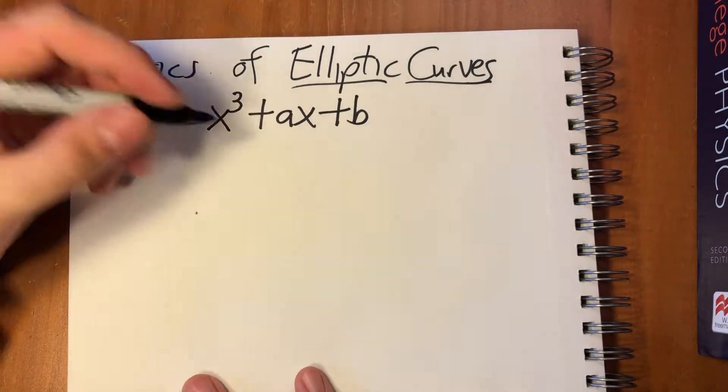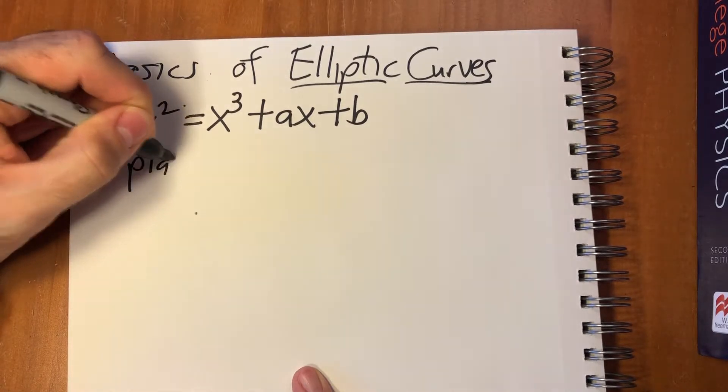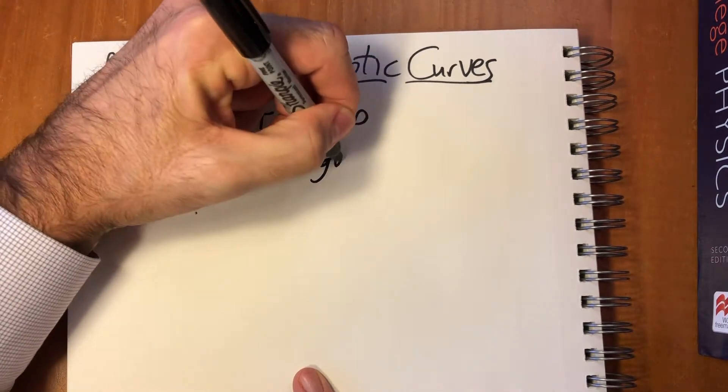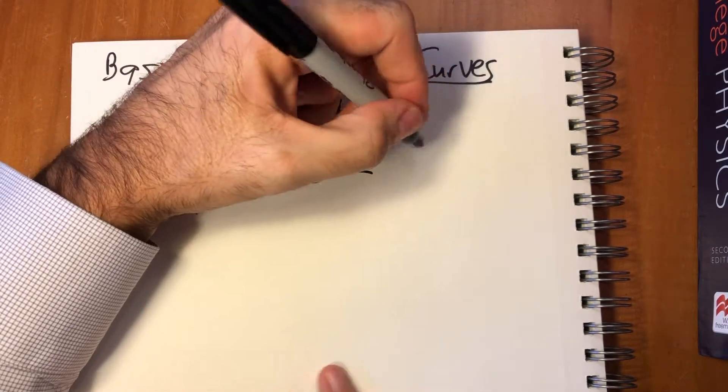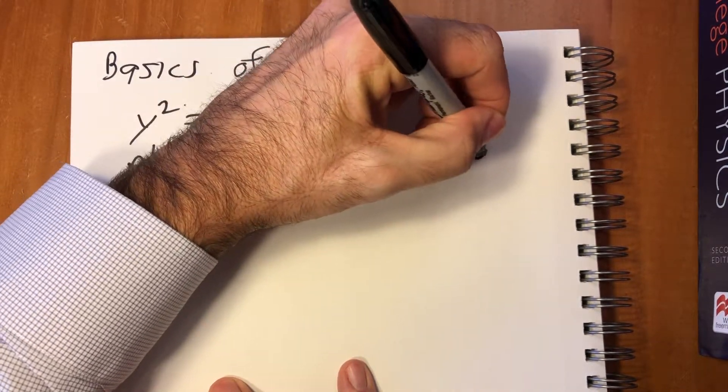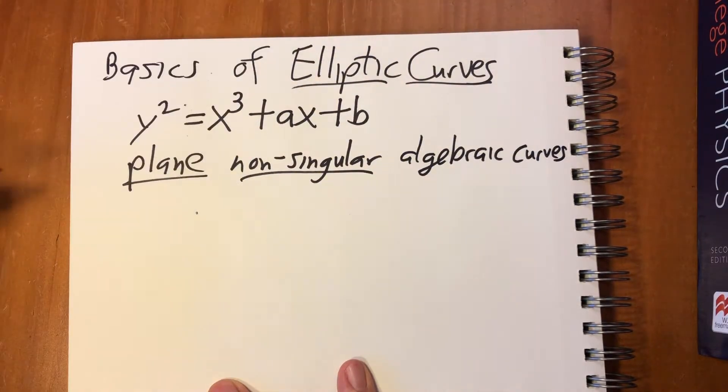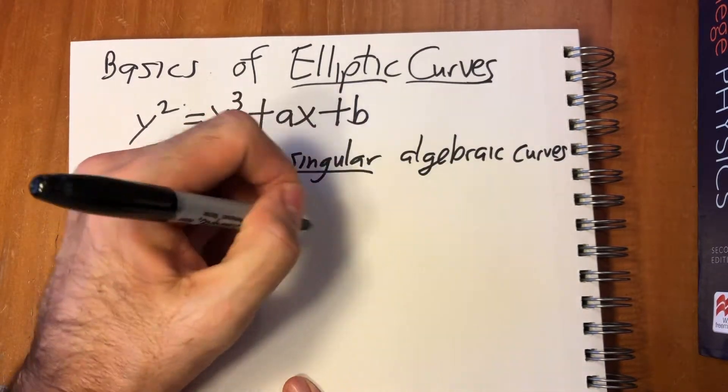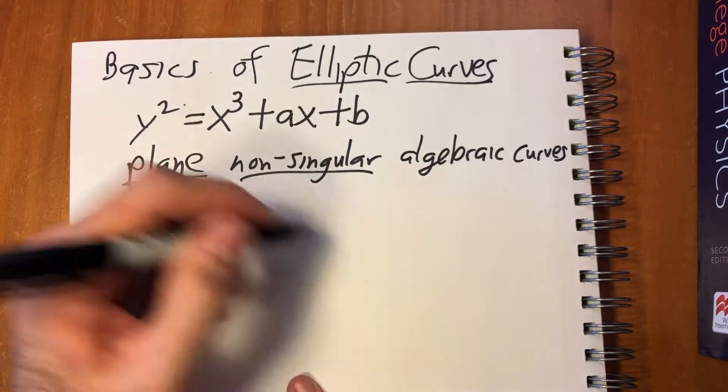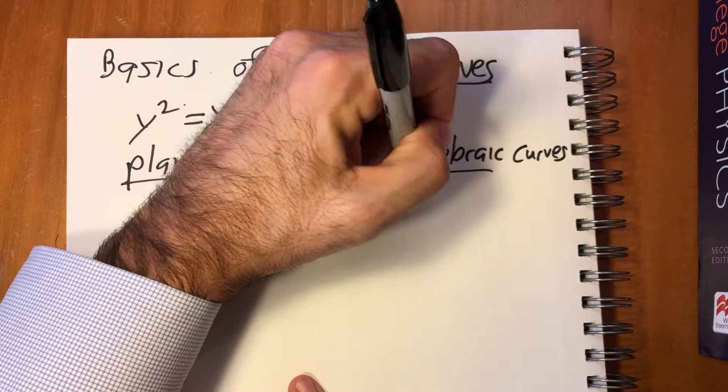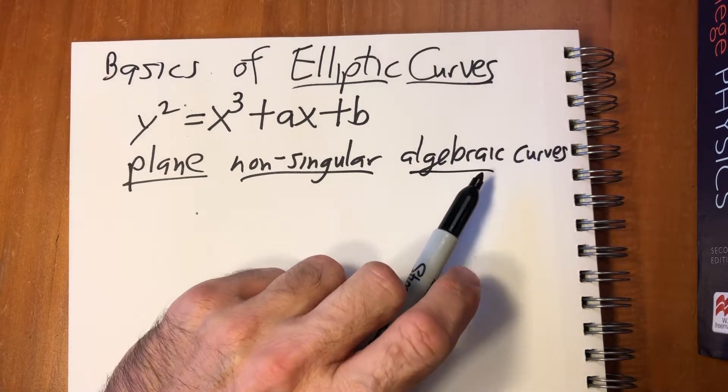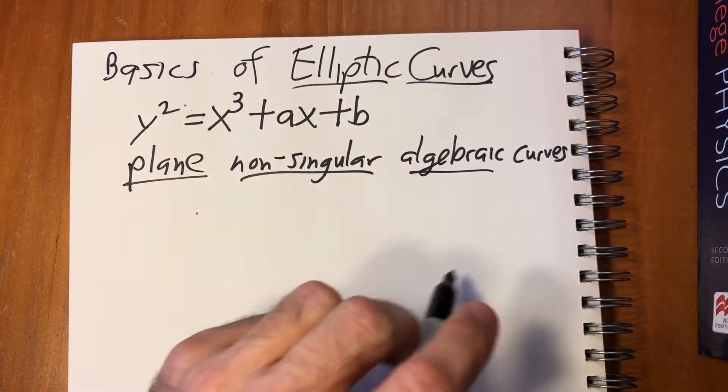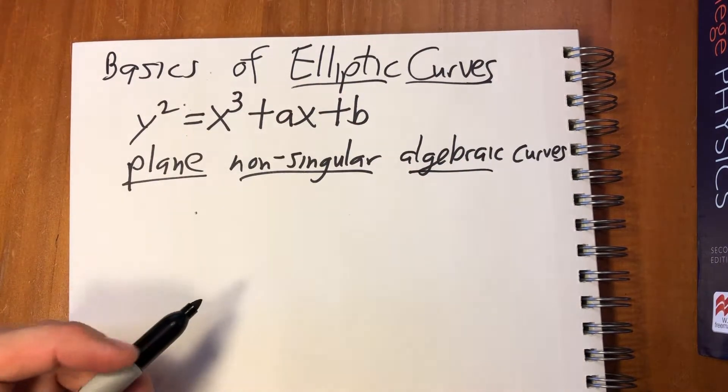The standard equation for an elliptic curve is y² = x³ + ax + b. The definition is elliptic curves are plane non-singular algebraic curves. Plain means it's on the XY plane, non-singular means it's smooth with no cusps and no places where it crosses itself. Algebraic means it's a polynomial in two variables.